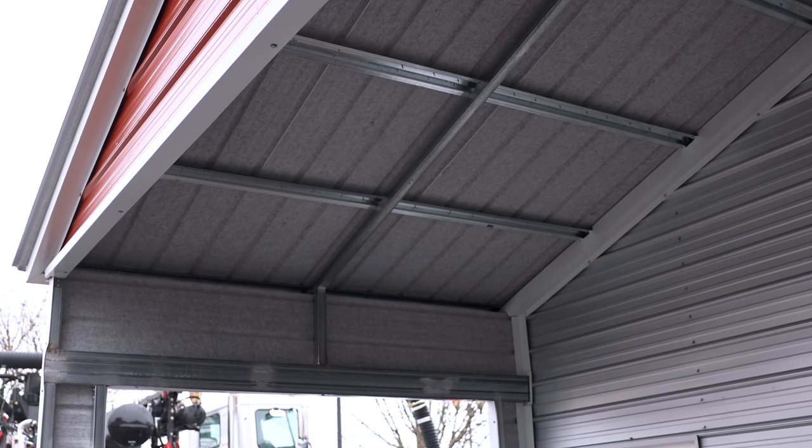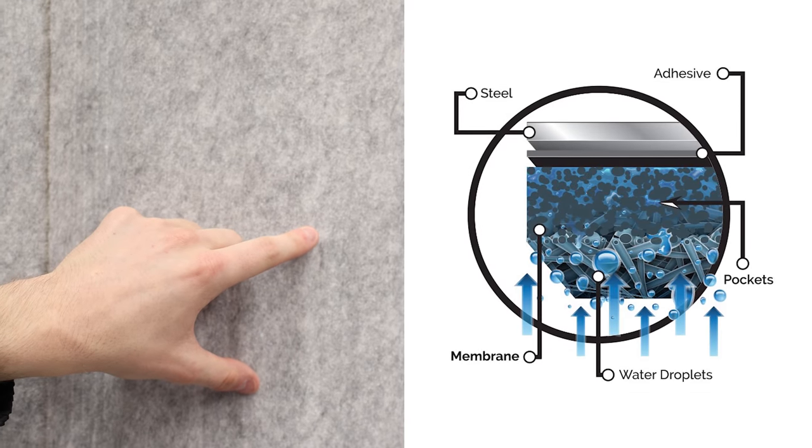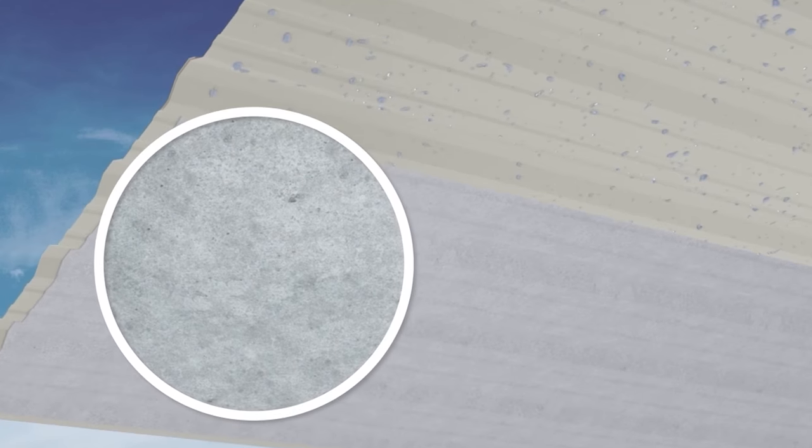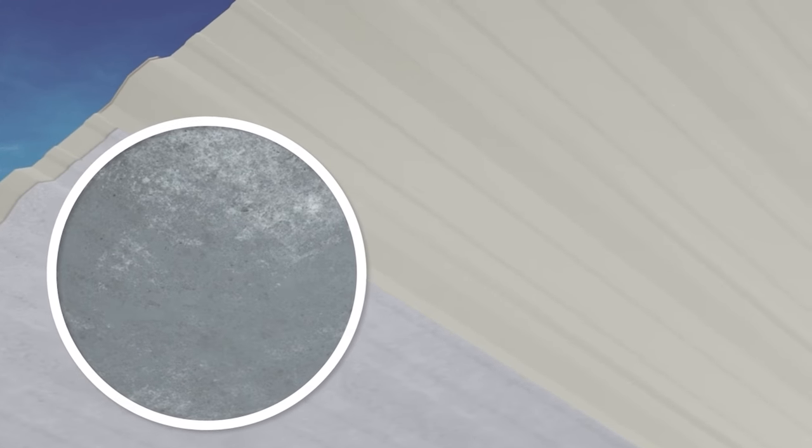However, with our condensation solution, a thin felt-like material is securely mounted to the inside of your metal panels. This material is absorbent and resolves the issue before it can even start.